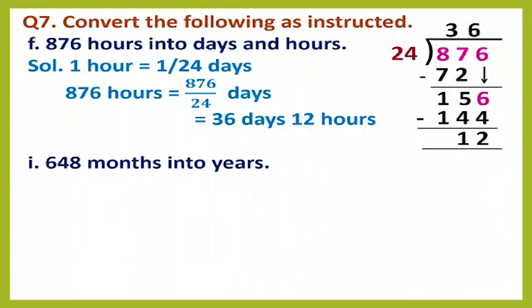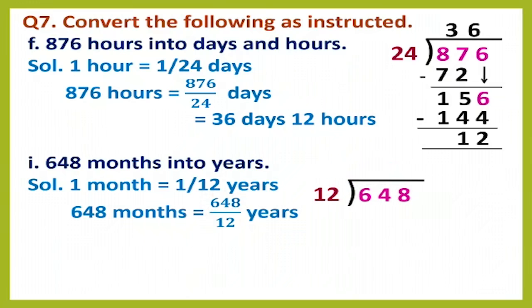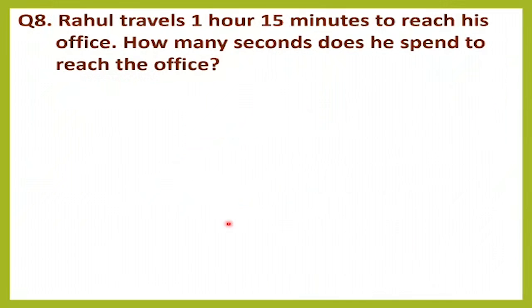The next question: convert 648 months into years. One month equals 1/12 years, so 648 months = 648 ÷ 12 years. Dividing: 12 × 5 = 60, subtract from 64 to get 4, bring down 8 to make 48; 12 × 4 = 48. The quotient is 54, so 648 months equals 54 years.